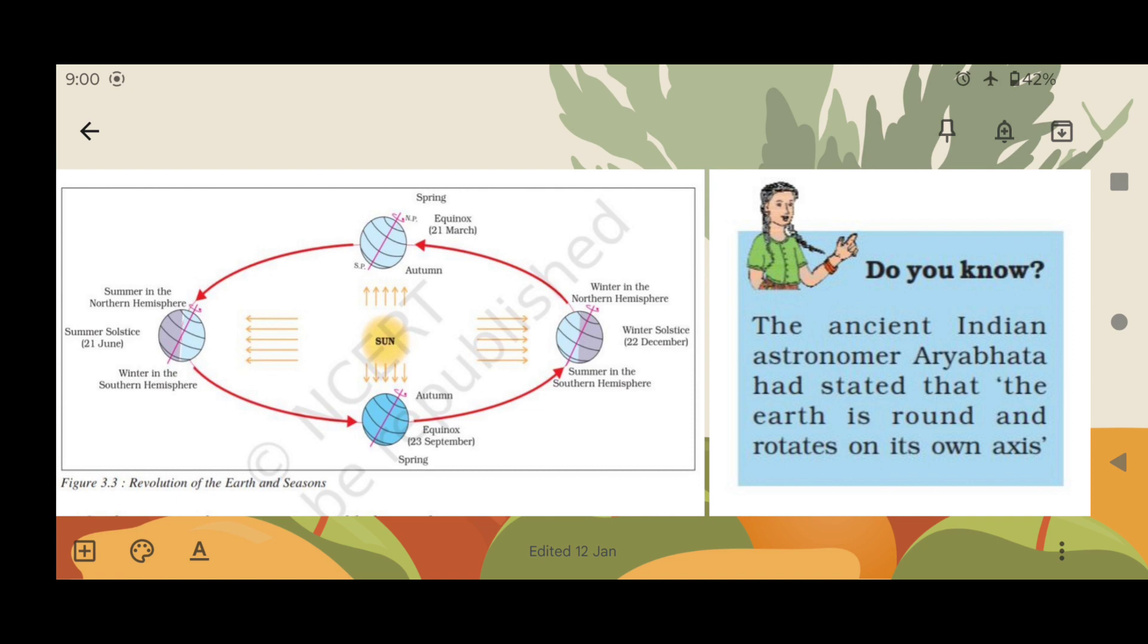Here is a picture from NCERT book. That is, 21st March is equinox. In northern hemisphere, it is spring and in southern hemisphere, it is autumn. On 22nd December, it is winter solstice: winter in the northern hemisphere and summer in the southern hemisphere.